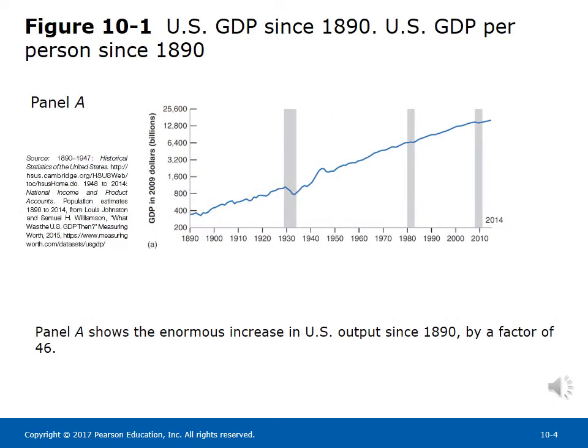Figure 10-1 illustrates U.S. real GDP since 1890. Panel A shows the enormous increase in U.S. output since 1890, by a factor of 46. Note that the vertical scale is a logarithmic scale. The characteristic of a logarithmic scale is that the same proportional increase in a variable is represented by the same distance on the vertical axis.